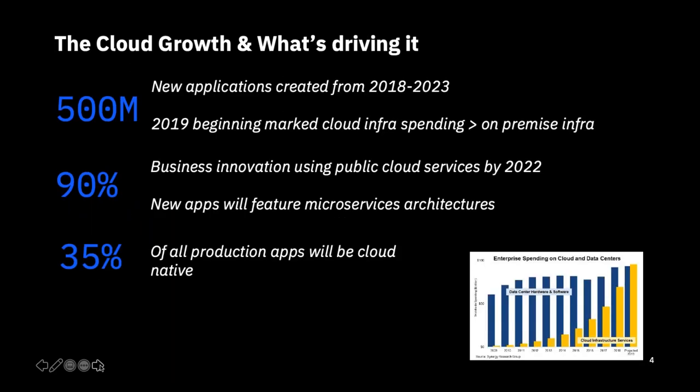I want to draw your attention to the chart in the bottom right corner. The blue bars represent the last dozen years or so of on-premise infrastructure spending. As you can see, it was fairly high, growing very little, then plateauing and actually beginning to decline. By end of 2018, the blue bars stagnated, representing that hardware infrastructure spending is coming to a halt.